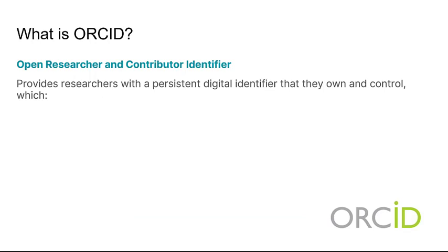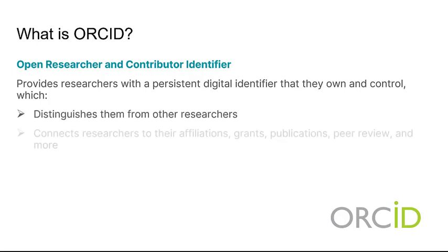ORCID stands for Open Researcher and Contributor Identifier. It provides researchers with a persistent digital identifier — an ORCID ID — that they own and control, and that distinguishes them from every other researcher. Researchers can connect their ID with their professional information, affiliations, grants, publications, peer review, and more.